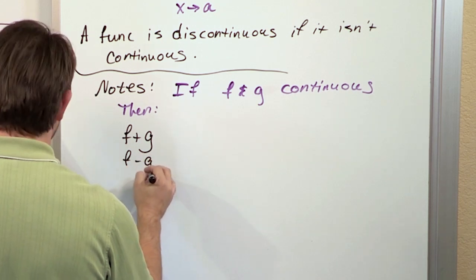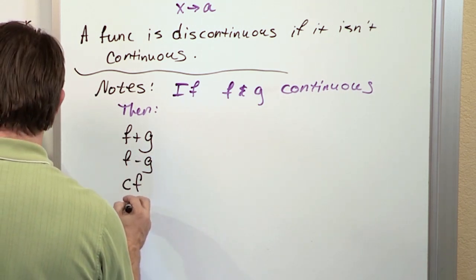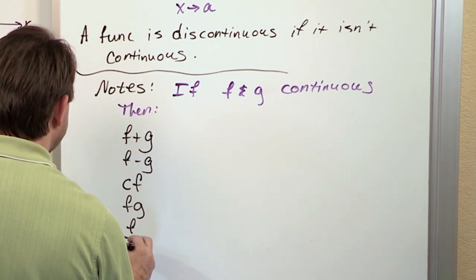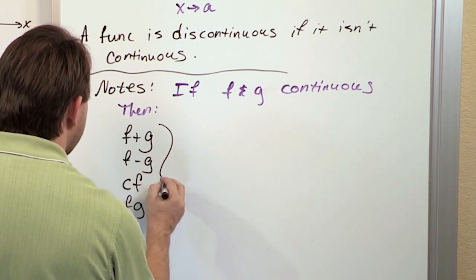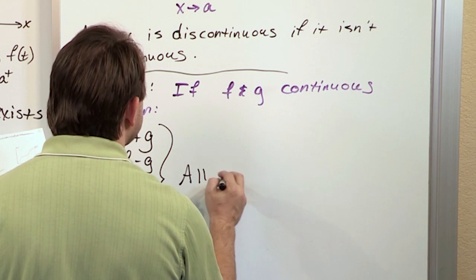You can say F plus G, F minus G, a constant C times the function F, F times G, or F divided by G. All of these kind of functions that you can define in terms of F and G, they are all continuous as well.